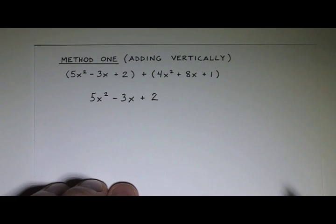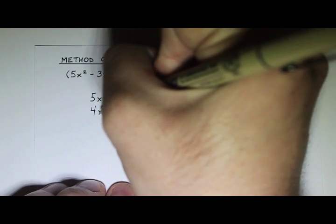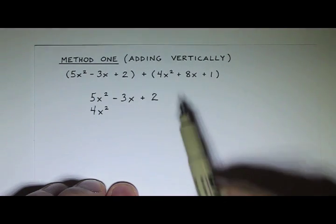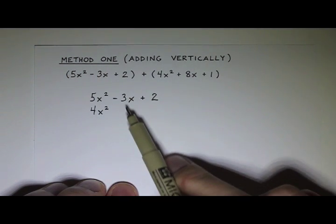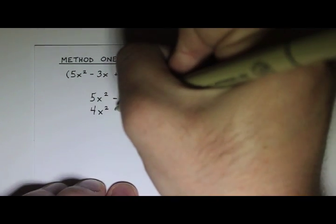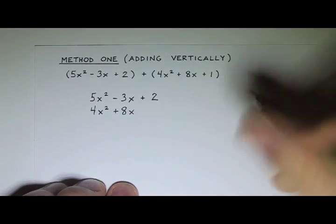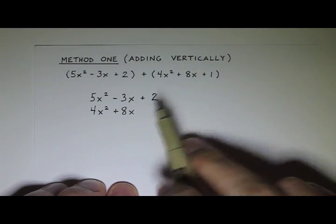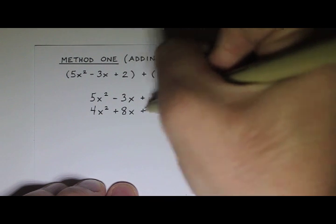So we have a 4x squared. I'm going to put that underneath the 5x squared term. And then I have an 8x. I'm going to put that underneath the negative 3x term. So that's a plus 8x. And then I have a plus 1. I'm going to put that underneath the plus 2. So they're all lined up.